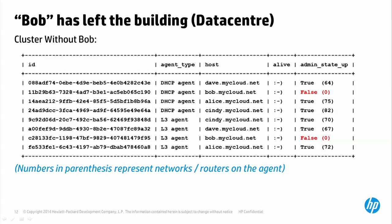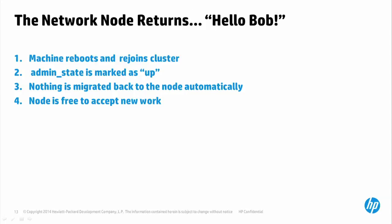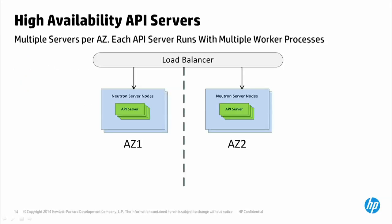When the machine returns to the cluster, it marks its own admin state as back up, but workload is not migrated back. The remaining nodes keep the redistributed load and the returning node will take new work as it becomes available, but nothing is actively migrated over. Forcing a rebuild would cause a slight outage and isn't considered worth it.